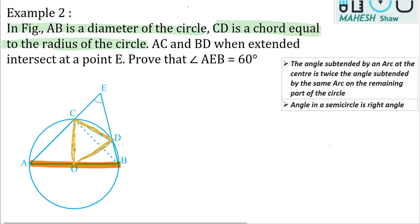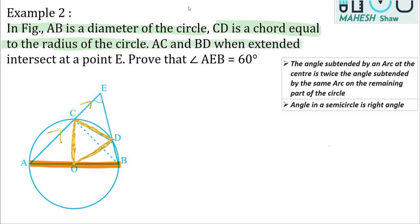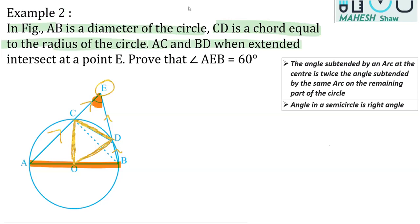Further in the question, it says that AC and BD are extended. AC is extended and BD is also extended to meet at point E. What we have to prove is that angle AEB is 60 degrees.